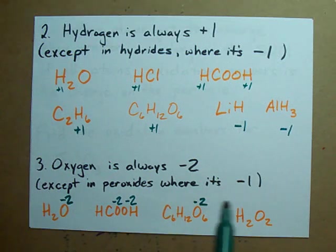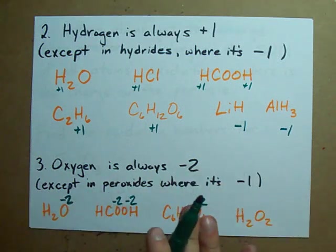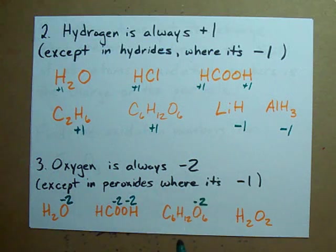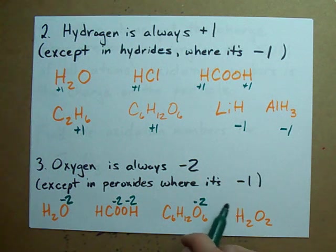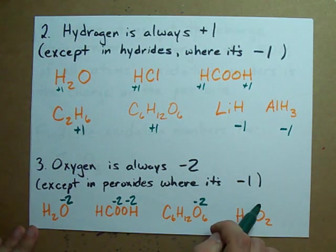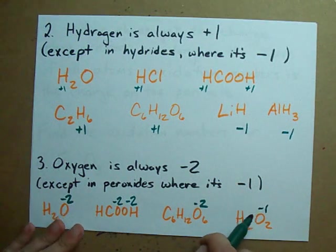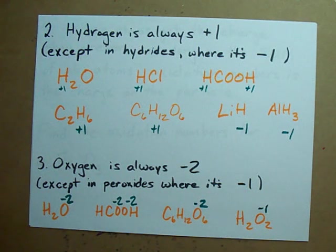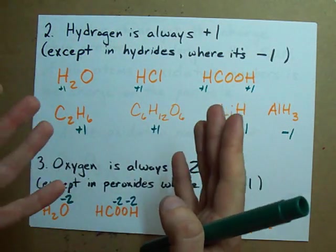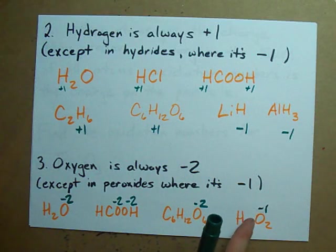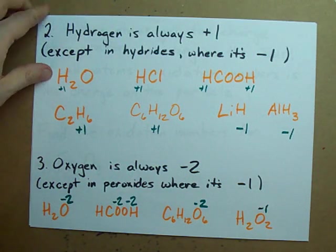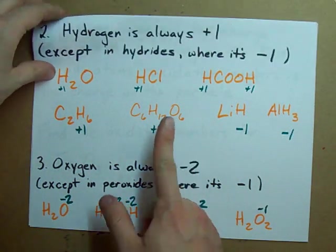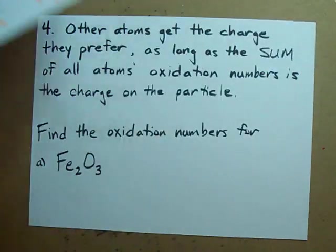The only exception you're probably ever going to see, and I can't even promise that you'll even see it, is H2O2. This is hydrogen peroxide. And in this case, the oxygens get a charge of minus one. There are other peroxides that exist in the world, but you're probably only ever going to see this. Those are the last steps two and three.